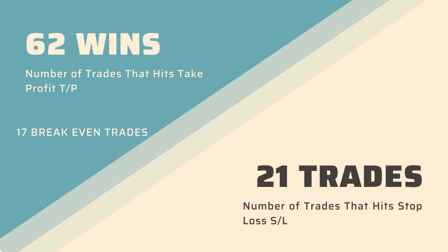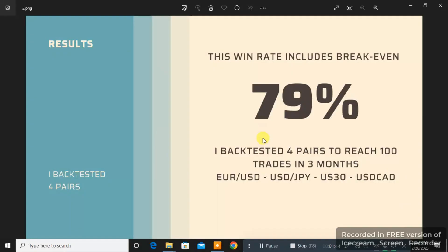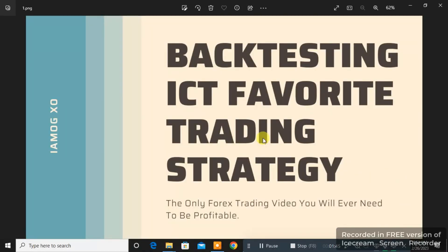I backtested 4 pairs to reach 100 trades in 3 months: EU, UJ, US-30, and USD-CAD. These are the 4 pairs I backtested with, and the result was mind-blowing. This result literally blew my mind.